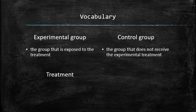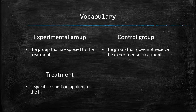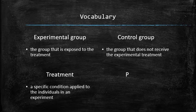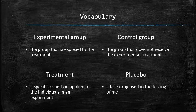Treatment: a specific condition applied to the individuals in the experiment. One of the possible treatments is placebo: a fake drug used in the testing of medication. In the Salk vaccine experiment, the experimental group was treated with vaccine and the control group with placebo.